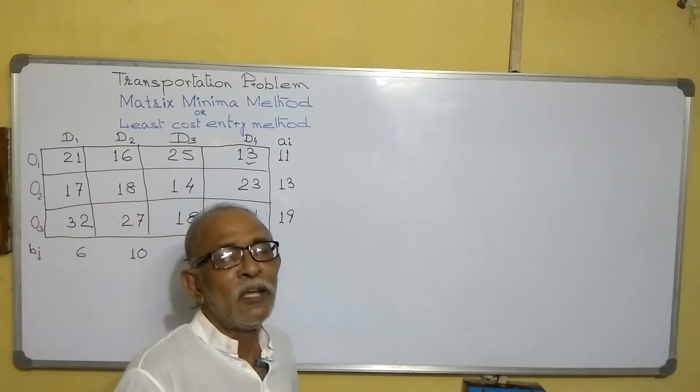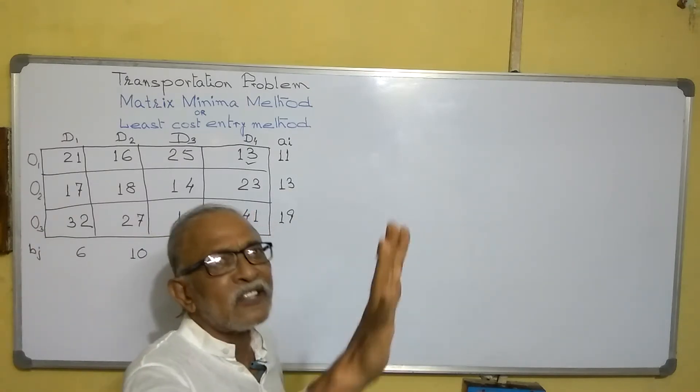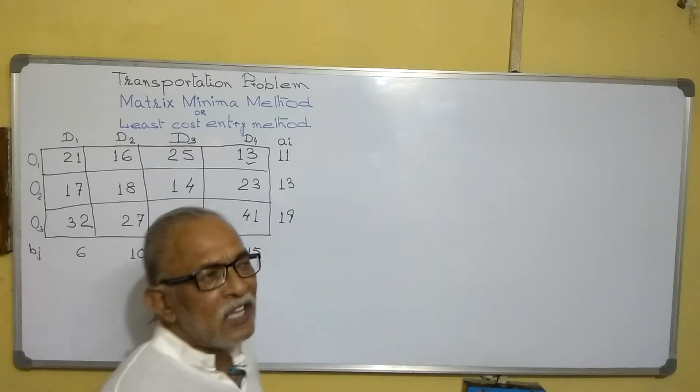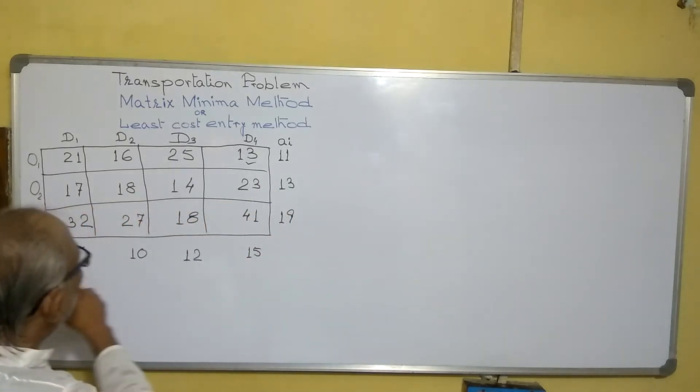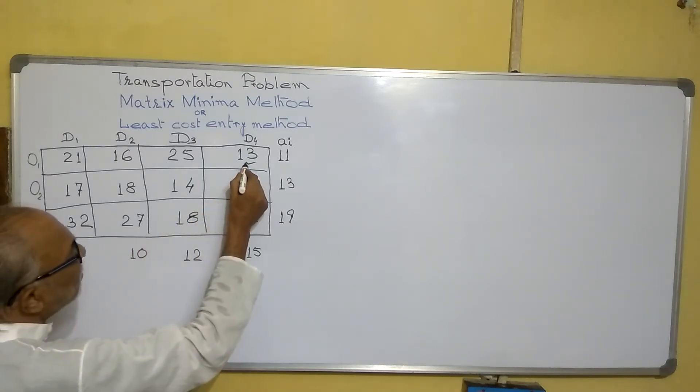If it is not equal, then I will show in some other methods. Here, first always check it is equal. So now, first find the least cost.